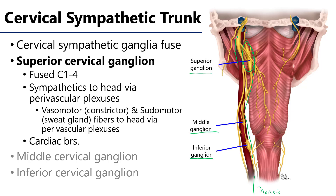Some of the fibers traveling throughout these paravascular plexuses are vasomotor fibers, which innervate the smooth muscles of the arterial wall. When activated, they constrict the wall of the artery to decrease the lumen. There are also pseudomotor fibers, which enhance the operation of sweat glands throughout the skin of the head and neck.